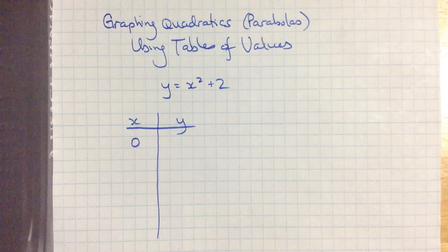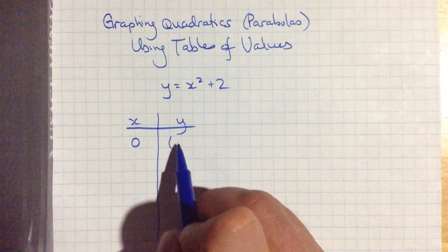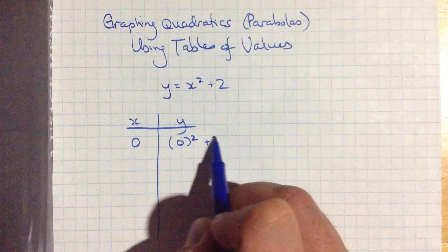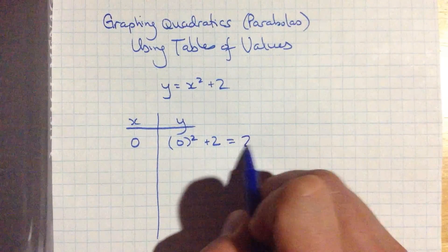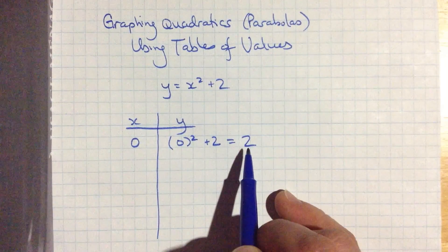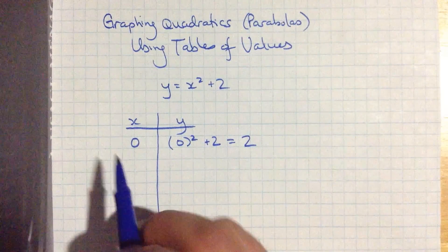we often will use x equals 0, so that y value is 0 squared plus 2. 0 squared is 0, plus 2 is positive 2, so we have a point 0, 2 that we're going to plot on our graph in a moment.